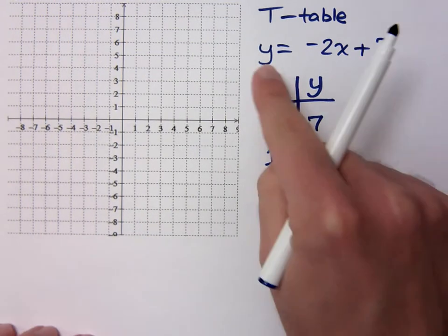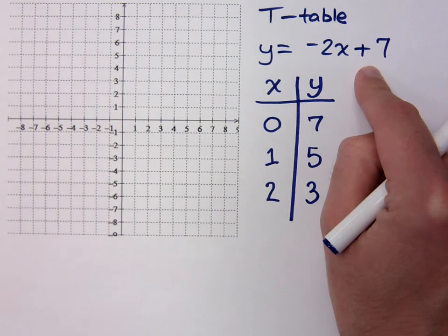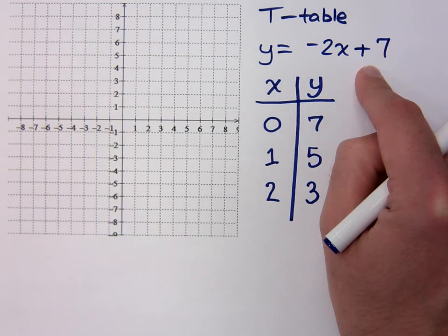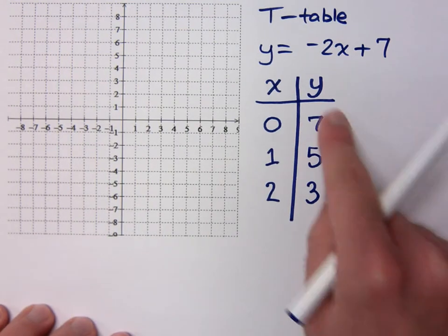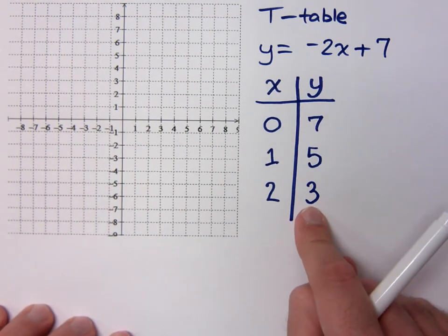Now, this is a linear equation. There are no exponents other than 1. You don't have any variables in the denominator. You don't have variables being multiplied times each other. It's linear. That means its representation as a graph should be a line. So when I plot these points, as long as I've done this correctly, it should be a line.